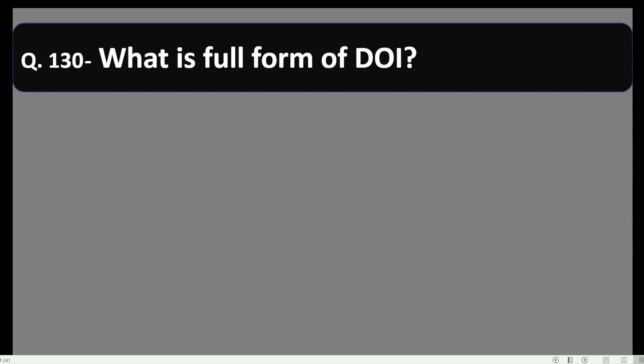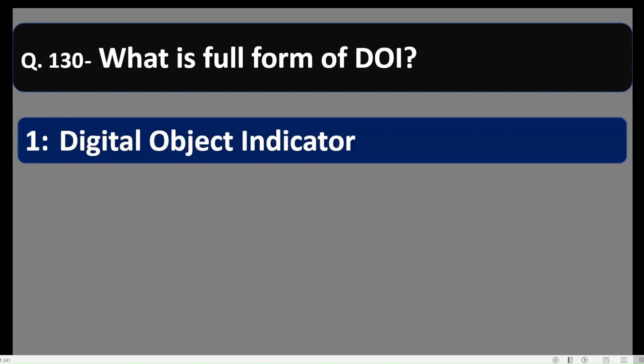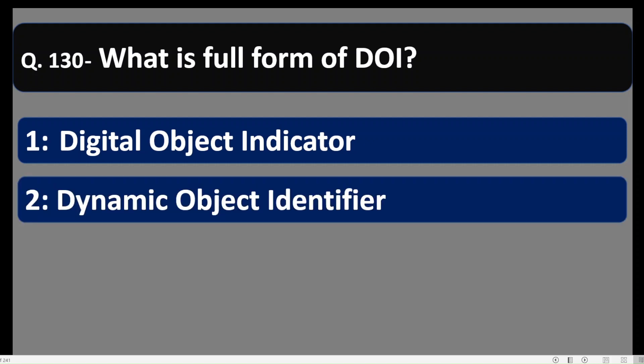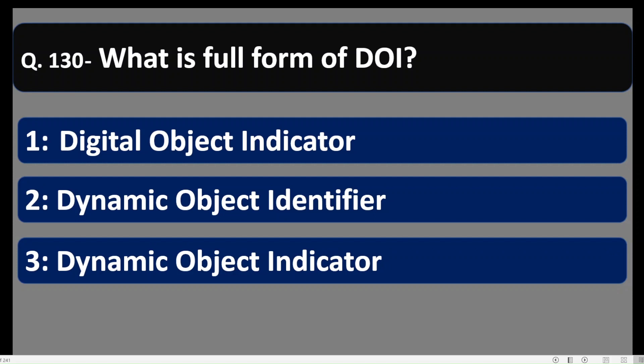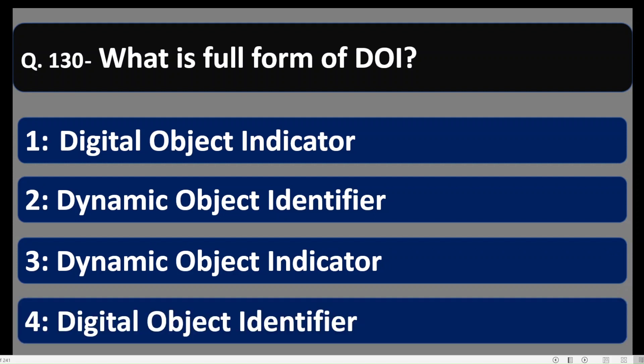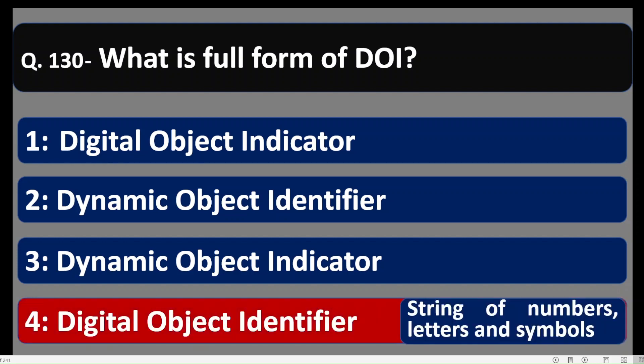Question number 130: What is the full form of DOI? Options: 1) Digital Object Indicator, 2) Dynamic Object Identifier, 3) Dynamic Object Indicator, 4) Digital Object Identifier. DOI stands for Digital Object Identifier — it is a string of numbers, letters, and symbols. Option 4 is correct.